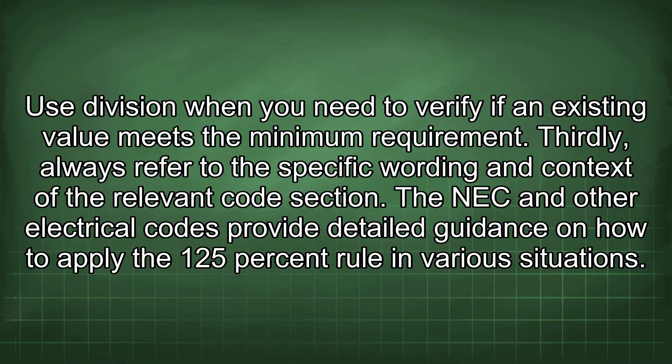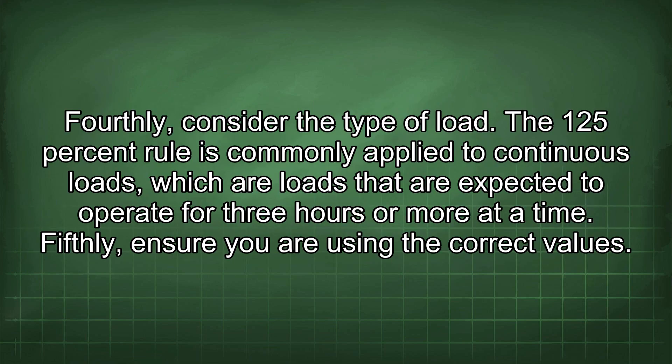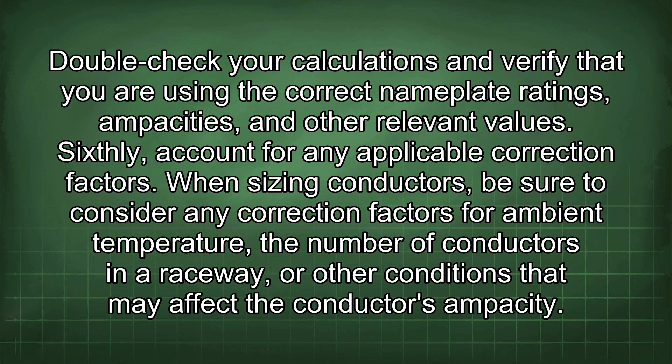Third, always refer to the specific wording and context of the relevant code section. The NEC and other electrical codes provide detailed guidance on how to apply the 125% rule in various situations. Fourth, consider the type of load — the 125% rule is commonly applied to continuous loads, which are loads expected to operate for three hours or more at a time. Fifth, ensure you are using the correct values; double-check your calculations and verify nameplate ratings and ampacities. Sixth, account for any applicable correction factors for ambient temperature, the number of conductors in a raceway, or other conditions affecting conductor ampacity.